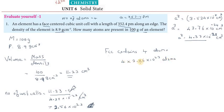Into 2.56 into 10 to the power 23 atoms. So 4 multiplied by gives 10.24 into 10 to the power 23 atoms. So once again repeat: the volume is equal to mass by density and the total volume is equal to 100 gram of an element.